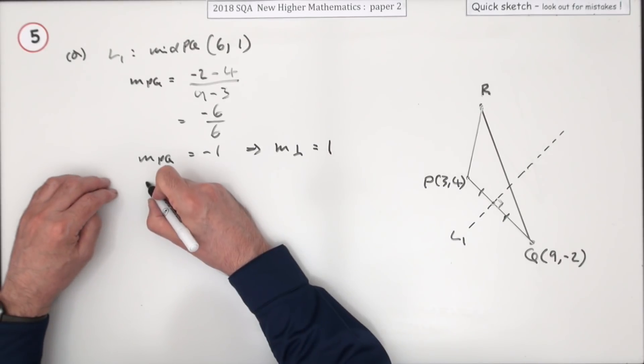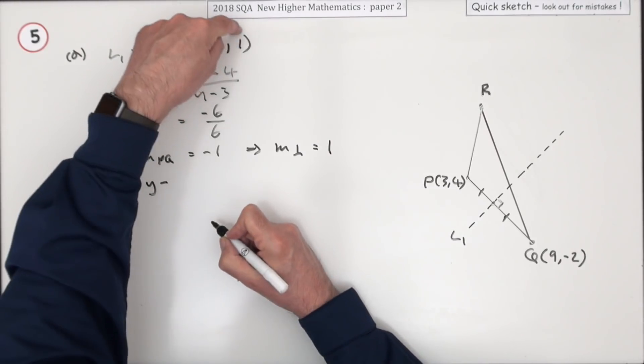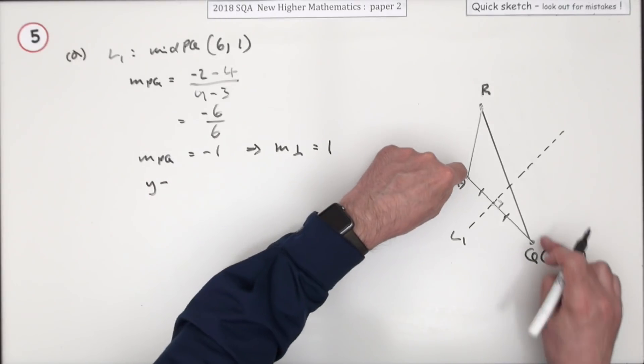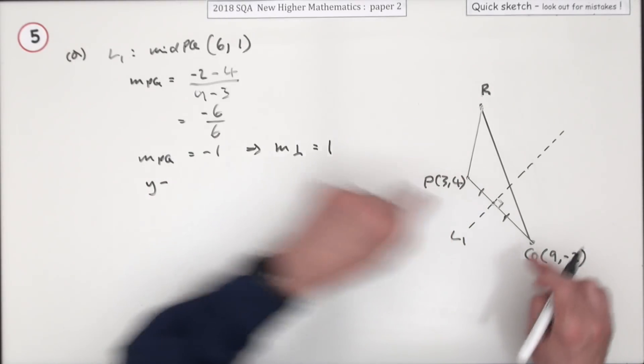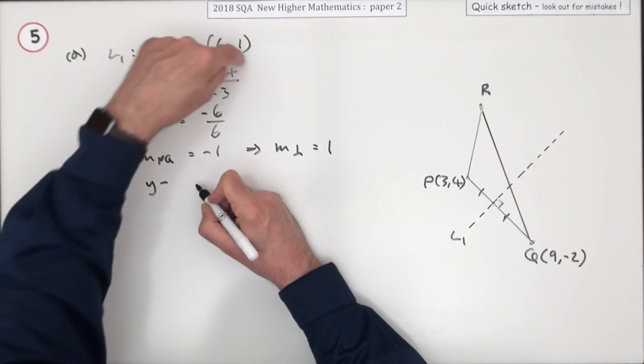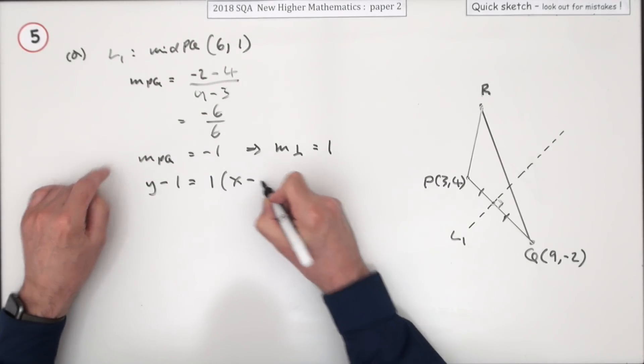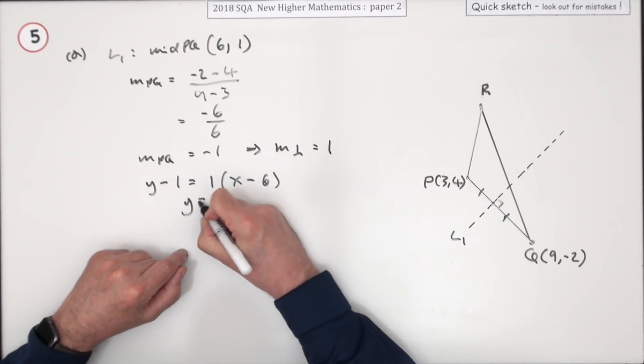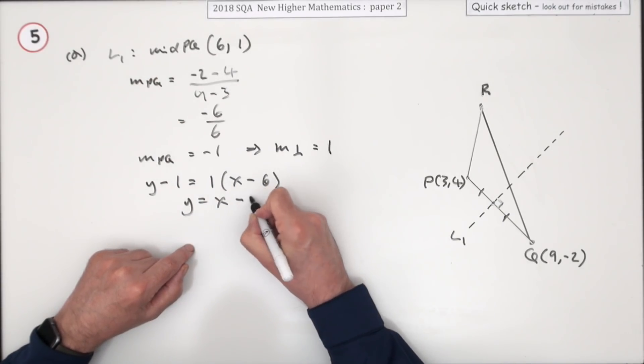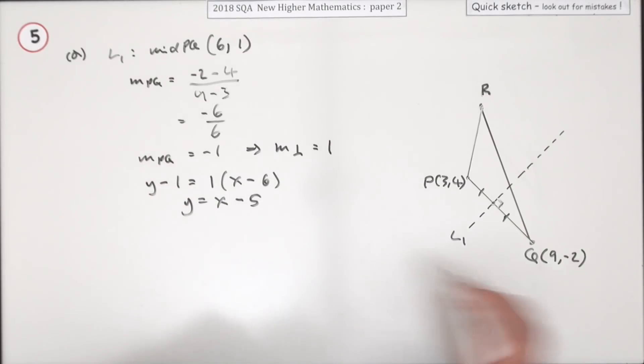So what's the equation of L1? Y minus the y coordinate, that's the only point that lies on it, 6,1. Y minus the y coordinate is the gradient times x minus the x coordinate. Y equals x minus 6 plus 1, which is x minus 5.